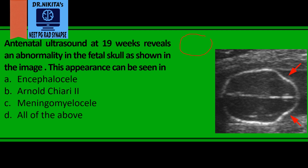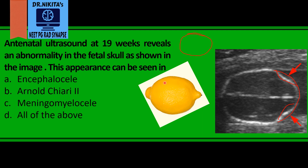A normal fetal skull should have a round or oval shape, just convex throughout. But what we see here is that instead of being a normal round shape, the frontal bones have become concave. This appearance is like that of a lemon — that is the fetal skull with frontal concavity — so it is called the lemon sign.